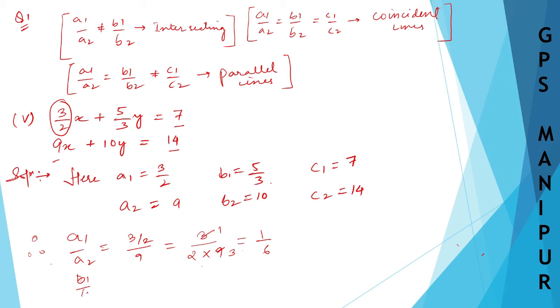B1/B2 will be equal to 5/3 divided by 10, which will be equal to 5 divided by 3 times 10. 5 divided by 10 is 1/2, so 1 divided by 6.